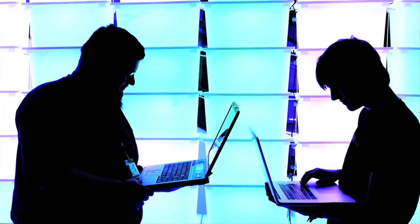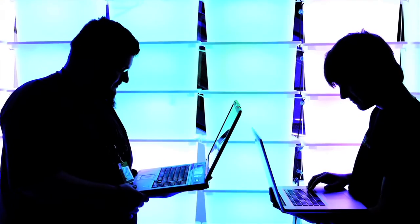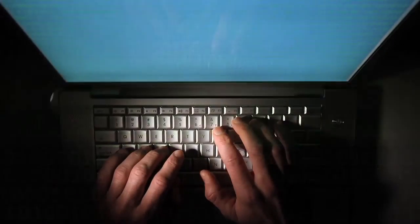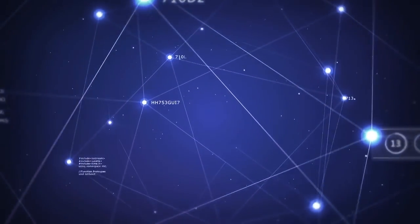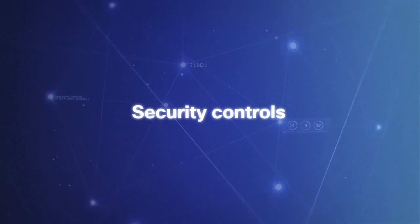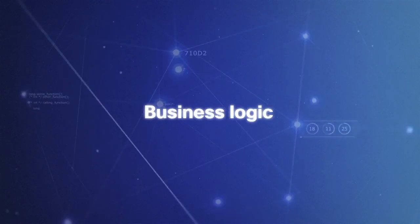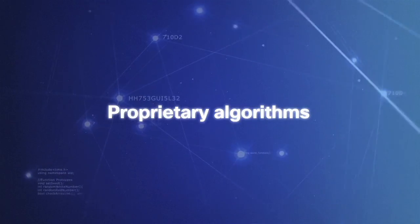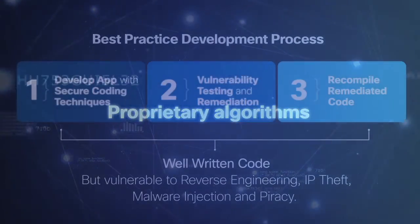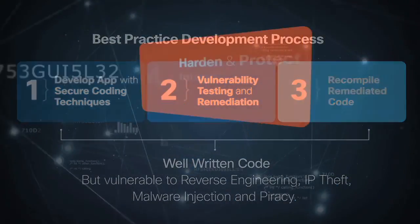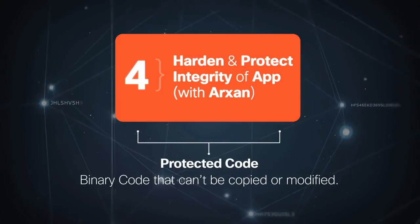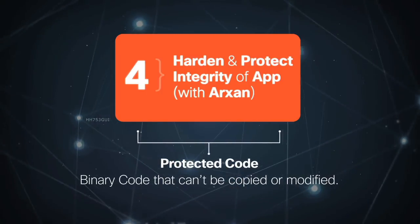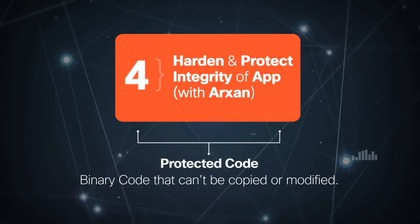Hackers can get access to the binary and can quickly and easily reverse-engineer it back to source code, and this gives them a clear blueprint of all the security controls, business logic, proprietary algorithms, and more, leaving the door wide open to tampering. So, to fully protect your code, you must harden your application.